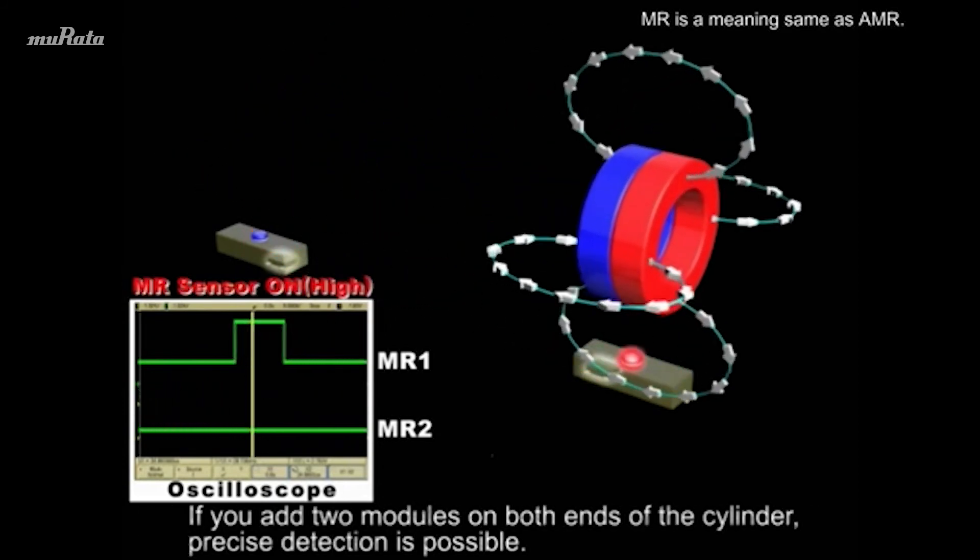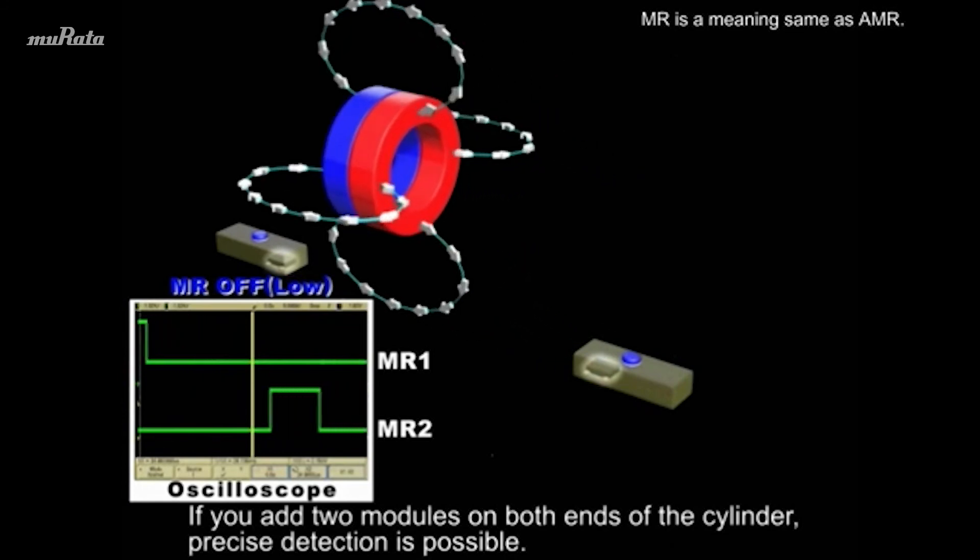If you add two modules on both ends of the cylinder, precise detection is possible.